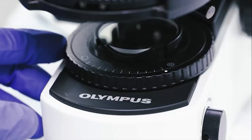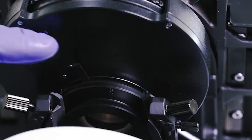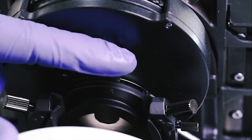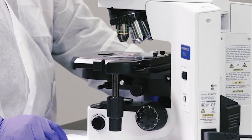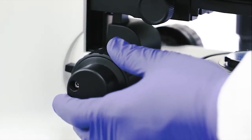Open the field diaphragm all the way and close the condenser diaphragm all the way. Move up or rack up the stage to its highest position using the stage controls.